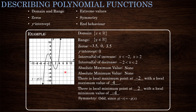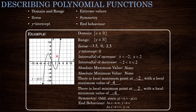Finally, let's talk about end behavior. As x approaches infinity, the y values go up and up, so y approaches infinity. As x approaches negative infinity — moving leftward on the x-axis — our y values get lower and lower, so y approaches negative infinity. That covers a range of properties to describe this function; we'll look more closely at end behavior, zeros, and turning points in another lesson.